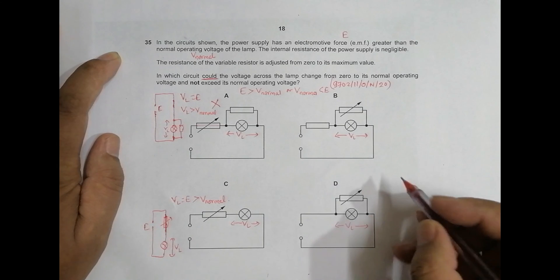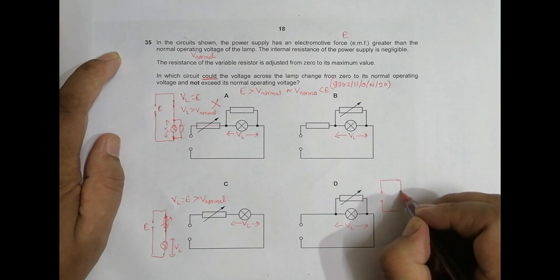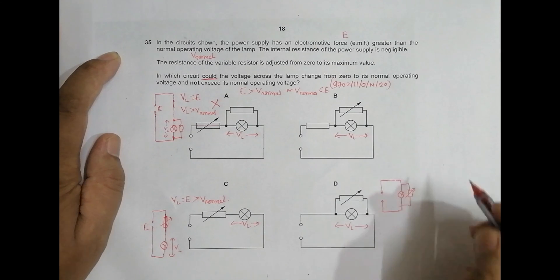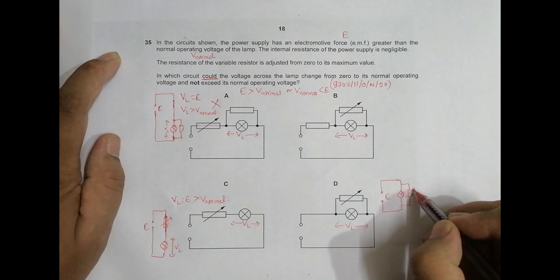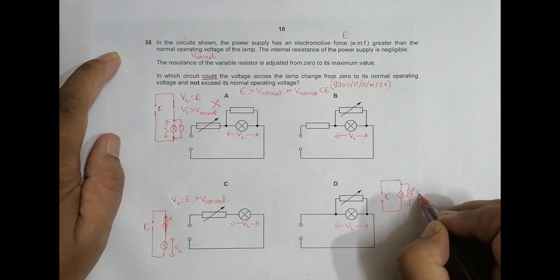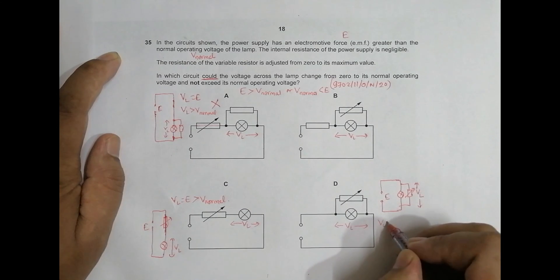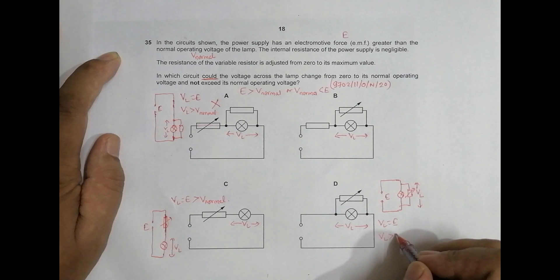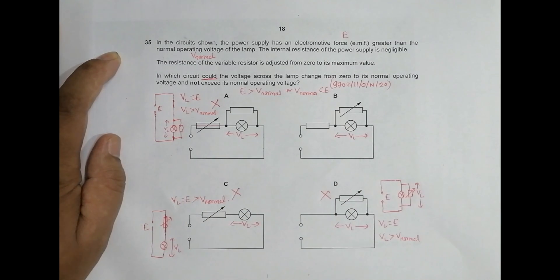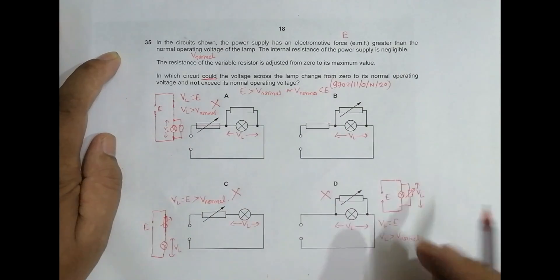In another circuit arrangement: the source connects directly to the lamp, then to the variable resistor. Whatever the value of the variable resistor, since there is no resistance in series before the lamp, the voltage across the lamp V_L will always equal E. So V_L equals E regardless of the variable resistor's value — meaning V_L is always more than V_normal. This also does not satisfy the condition, because V_L exceeds V_normal in all cases.